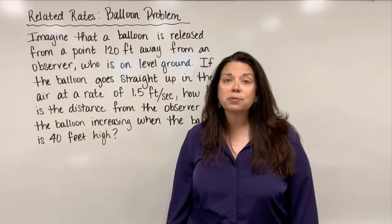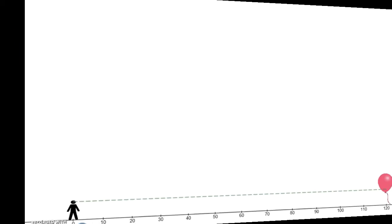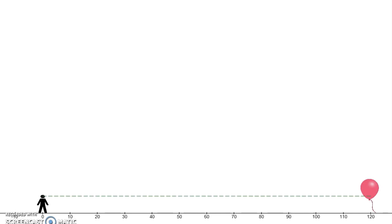So let's go to Desmos to explore an animation of this scenario. In looking at this Desmos animation here we can see we've got an observer here on the left hand side who is eyeballing this balloon here at 120 feet away. Now this balloon is going to get released and when it does it's going to go straight up in the air.